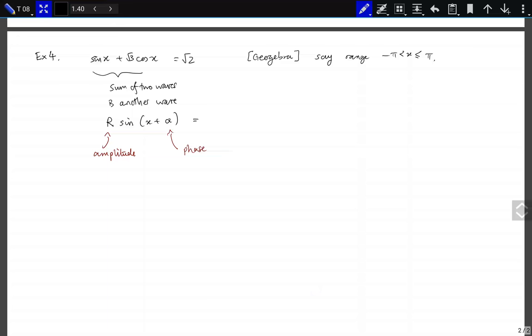And so if you expand this one, you pick the one that gives you the nice signs. That's a pun there, a sign as in S-I-G-N. r sin α cos x plus r cos α sin x. And we start identifying terms. So what we want is that the coefficients to match. So √3 becomes r sin α, and this one becomes r cos α.